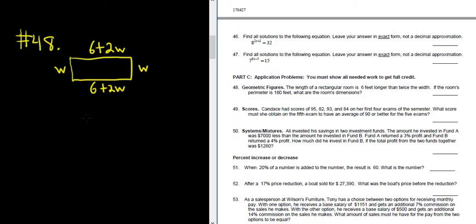So we're looking for the length and the width. Well the perimeter is 180, so if we add up the lengths of all the sides, that should be equal to 180. So w plus w plus 6 plus 2w plus 6 plus 2w equals 180.